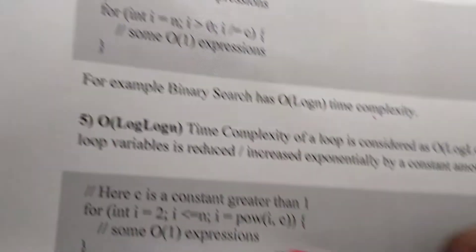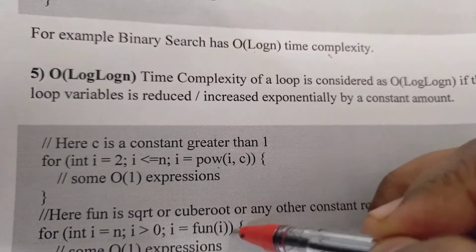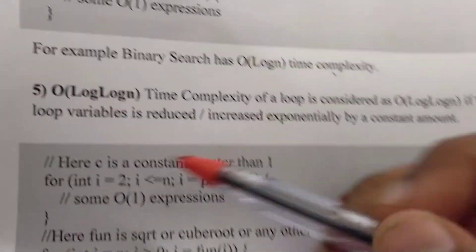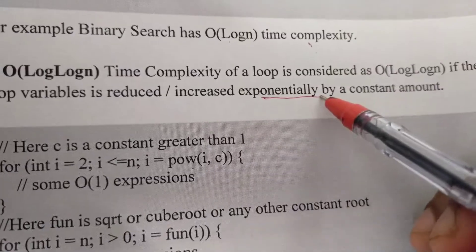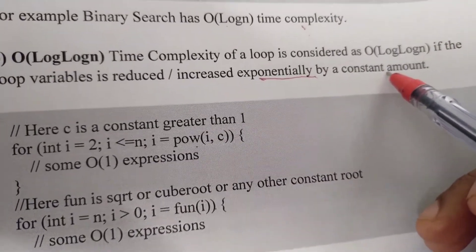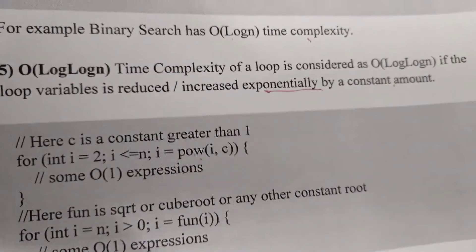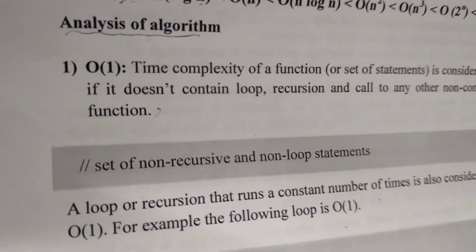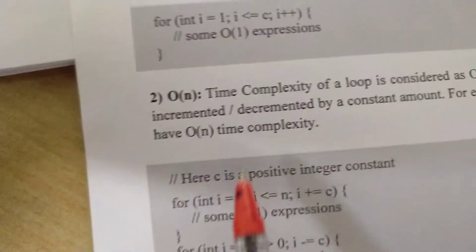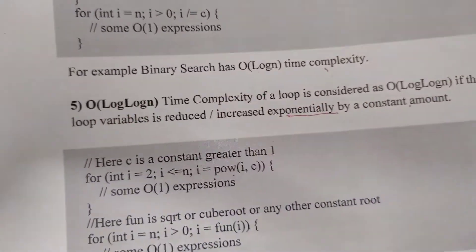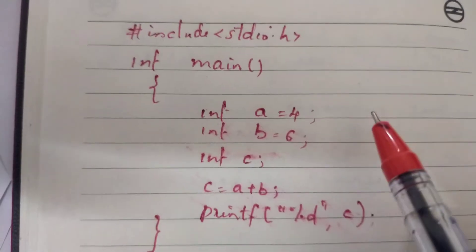The time complexity of a loop is considered as order of log n if the loop variable is reduced or increased exponentially by a constant amount. This gives order of log log n or order of log n depending on the case.